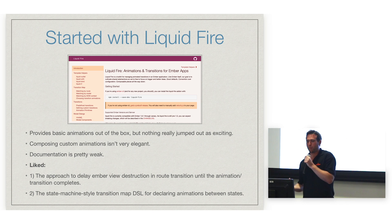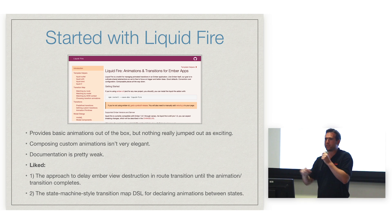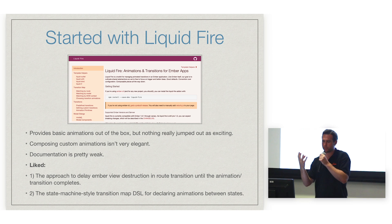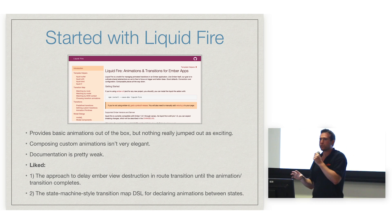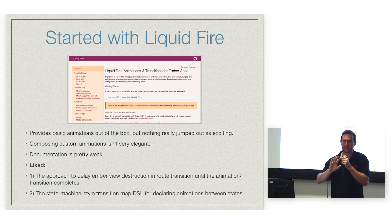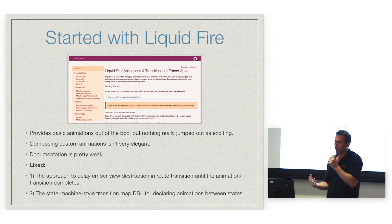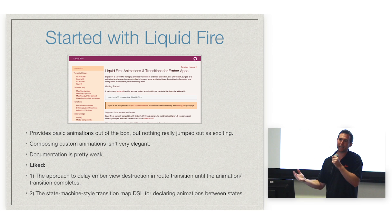But I did like a few things about Liquid Fire. They had a pretty smart way to handle Ember routes — when you transition between views, when you go from one route to another, it destroys the outgoing view and creates the incoming view. They had a smart approach to delaying the destruction of the outgoing view so that the view could be animated out and then destroyed once the animation was complete. I also liked that they did a state machine style transition map for declaring animations between states and between routes.